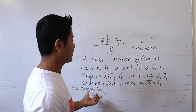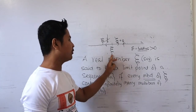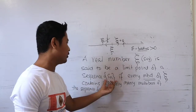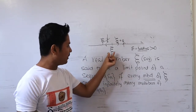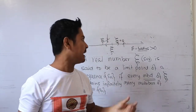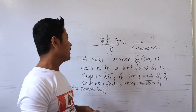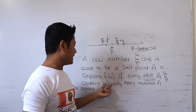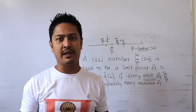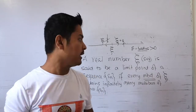So this is the statement for the limit point of a sequence. The real number ξ is a limit point of a sequence Sn. That means for every neighborhood — that is, for every epsilon — you can construct a neighborhood in which the sequence Sn has infinitely many members.